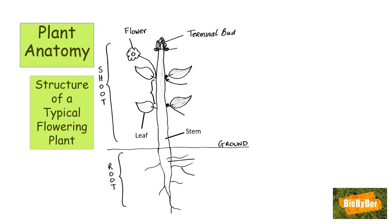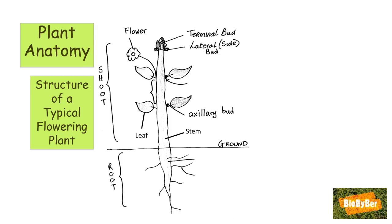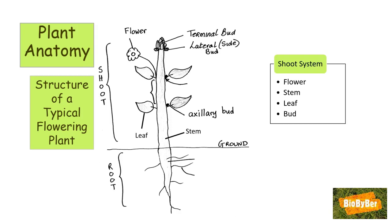When the terminal or apical bud is present, it prevents the growth of the side buds, or lateral buds. There is also a third type called the axillary bud, found in the angle that the leaf makes with the stem — 'axil' being another word for angle. So in summary, the shoot system is composed of the organs: flowers, stem, leaves, and buds.